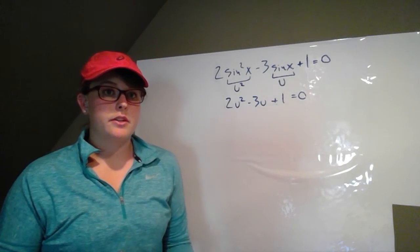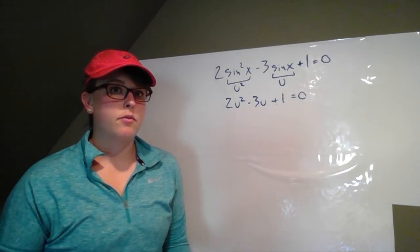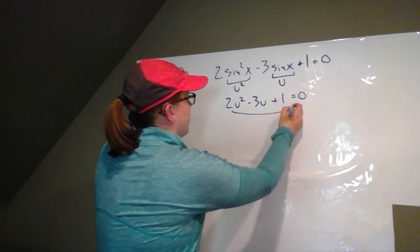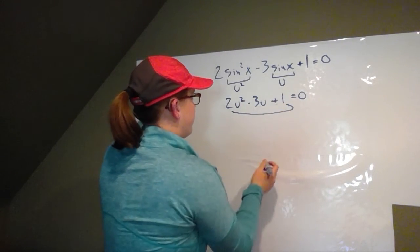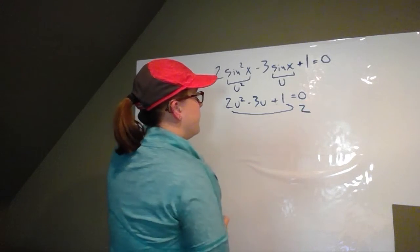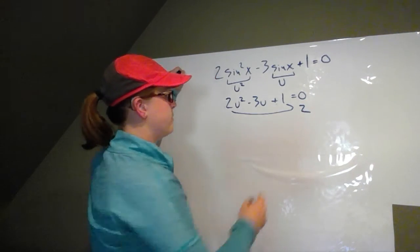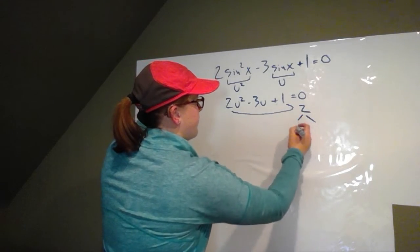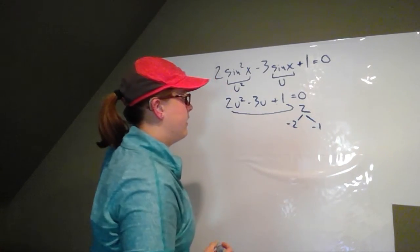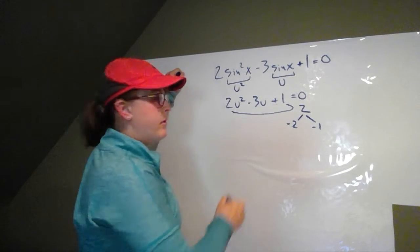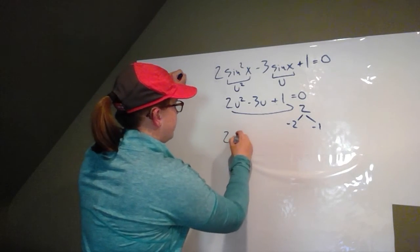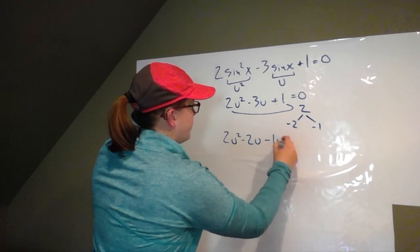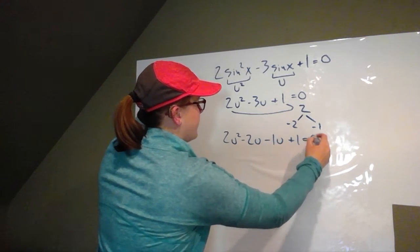So then we're going to factor this just like we would factor any quadratic with a leading coefficient that's not one. I'm going to take two times one, we get two. And then I'm looking for things that multiply to get two and add to get negative three. So in this case, we should get negative two and negative one. So now I'm going to rewrite this, we have two u squared minus two u minus one u plus one equals zero.